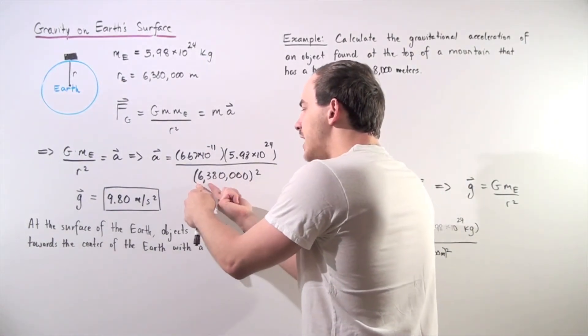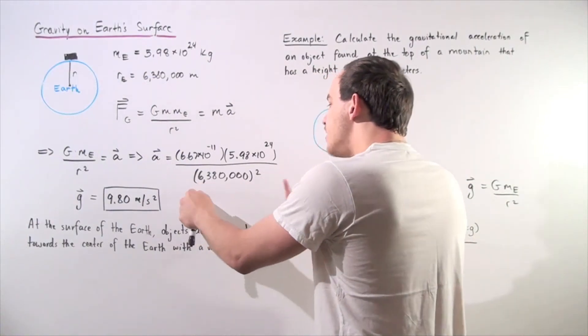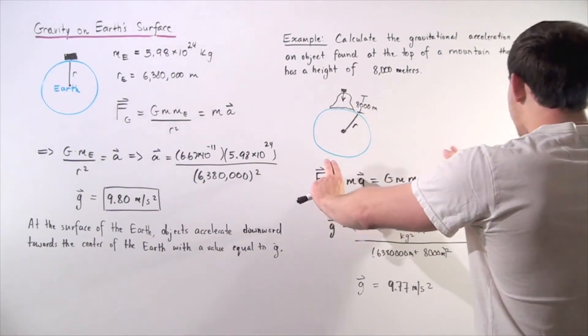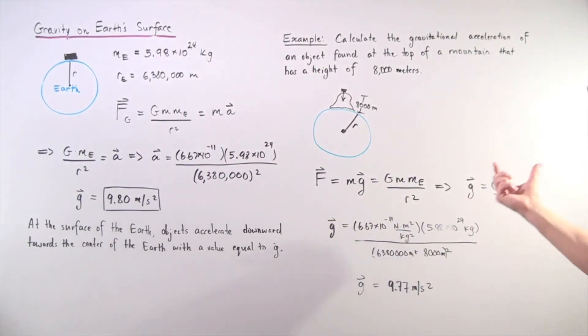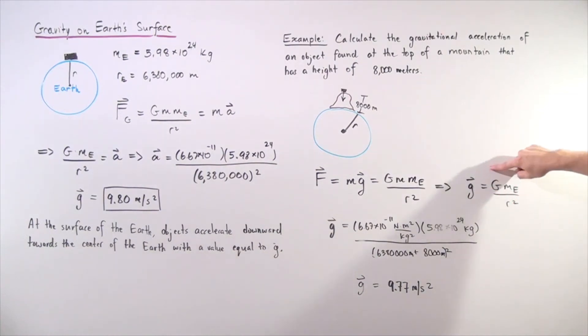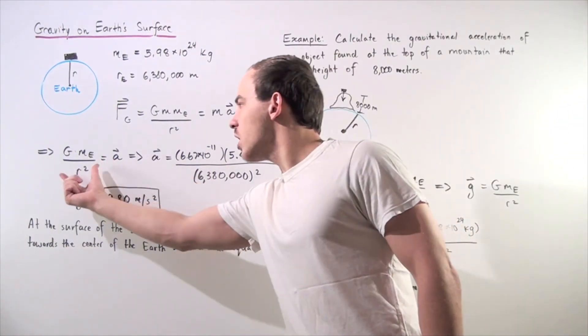6,380,000 meters plus 8,000 meters. So, once again, we set up the same exact equation, and we see that g, our gravitational constant, on top of the mountain, is equal to the same equation as we saw here.